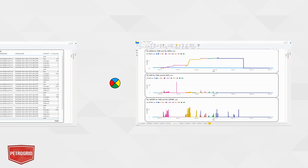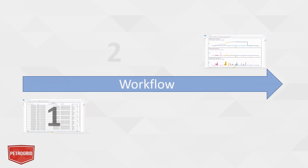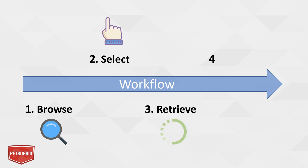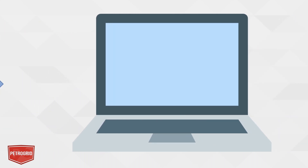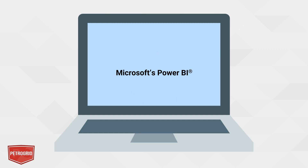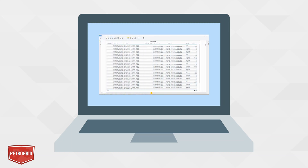To accomplish this, we will follow four simple steps: browse our catalog, select the data of interest, retrieve the data as a data grid, and display the data. We will be using WITSML data provided by Energistics as our sample data, Petrogrid's PGXML to retrieve and process the data, and Microsoft's Power BI to browse, select, and display the data. Let's begin.